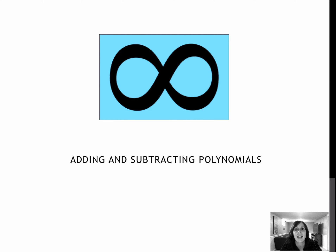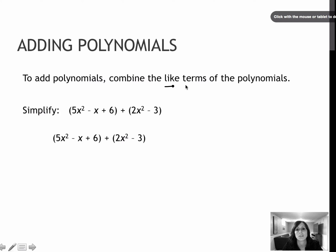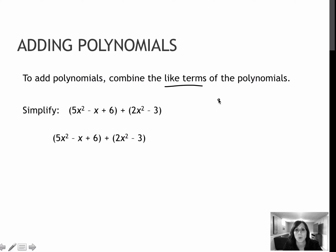This lesson is on adding and subtracting polynomials. When we add polynomials together, what we are concerned about doing is finding like terms. A like term simply means that it has the exact same variable or variables and the exact same exponent.